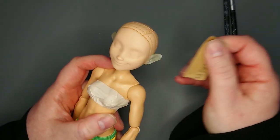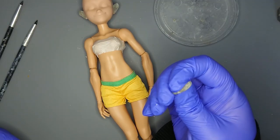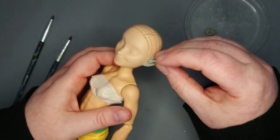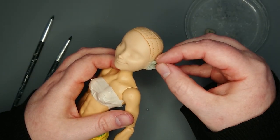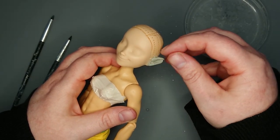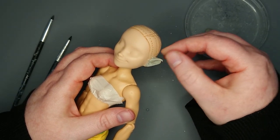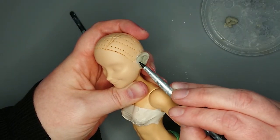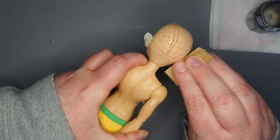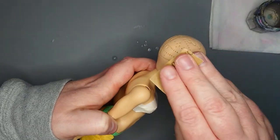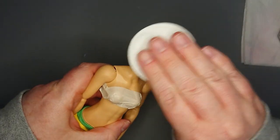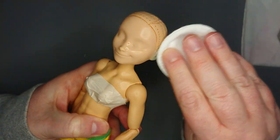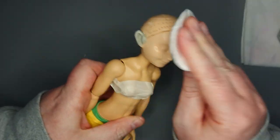After letting that cure overnight, I sand the ears before mixing more epoxy and adding detail. As before, I use silicone tools and water to help smooth the surface as much as I can. The next day, after everything is cured, I sand the ears again before cleaning everything with isopropyl alcohol to get rid of dust, fingerprints, that sort of thing.